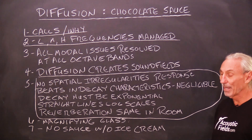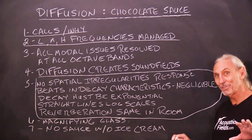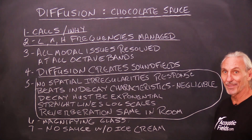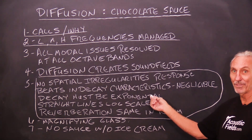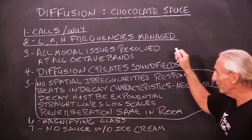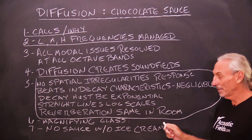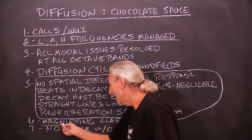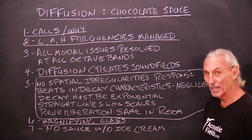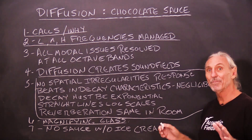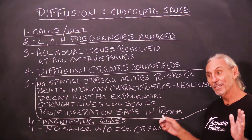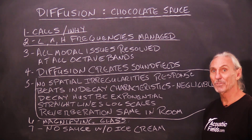Foam shaped like a diffuser, hemispherical pieces of wood — these are not going to be able to satisfy this scientific requirement. Diffusion is a very powerful tool, but it acts as a magnifying glass. So you've got to get all your other issues resolved first. You can't have the chocolate sauce without the ice cream.